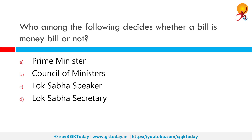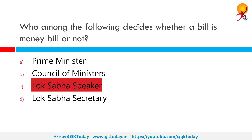Who among the following decides whether a bill is a money bill or not? Only those financial bills which contain provisions exclusively on matters listed in Article 110 of the constitution are called money bills. The question of whether a financial bill is a money bill or not is decided by the Speaker. Such a bill needs to be endorsed by the Speaker when passed by Lok Sabha and sent to Rajya Sabha.